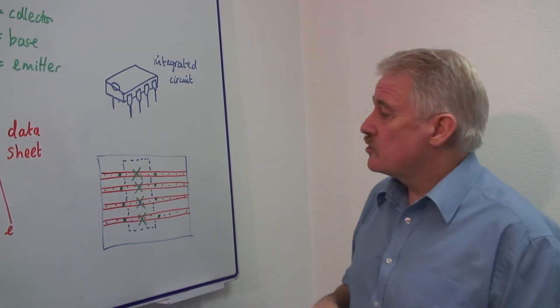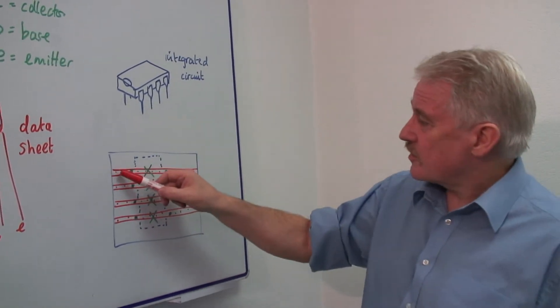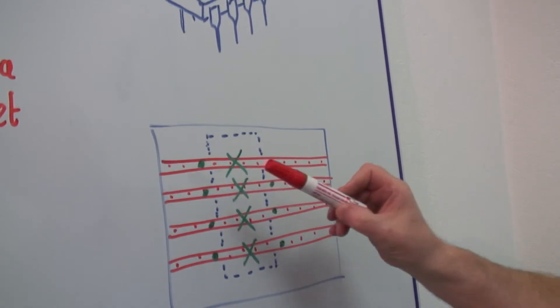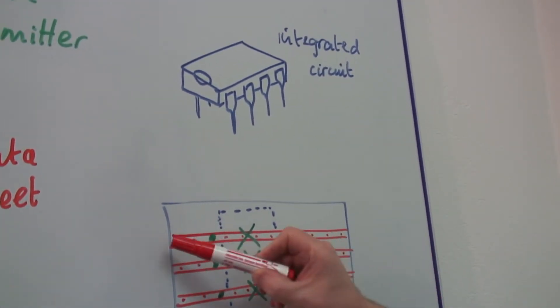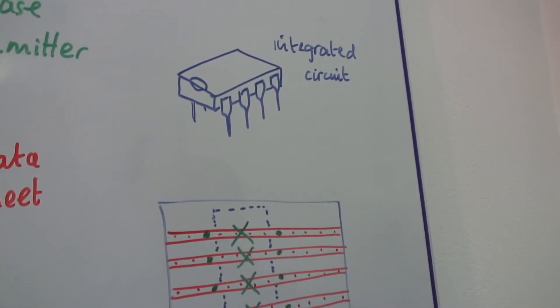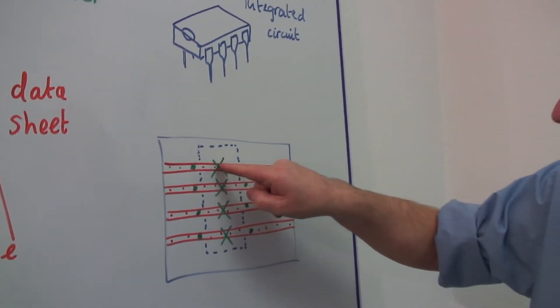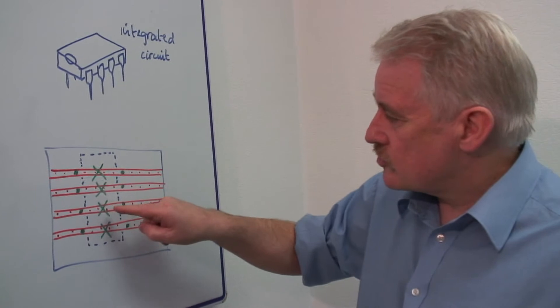So when we do this, as you can see, we've got a continuous line of copper here. But I've got two legs and the legs are both going into the same line of copper. That is not good. So what I have to do is I have to break the strip here.